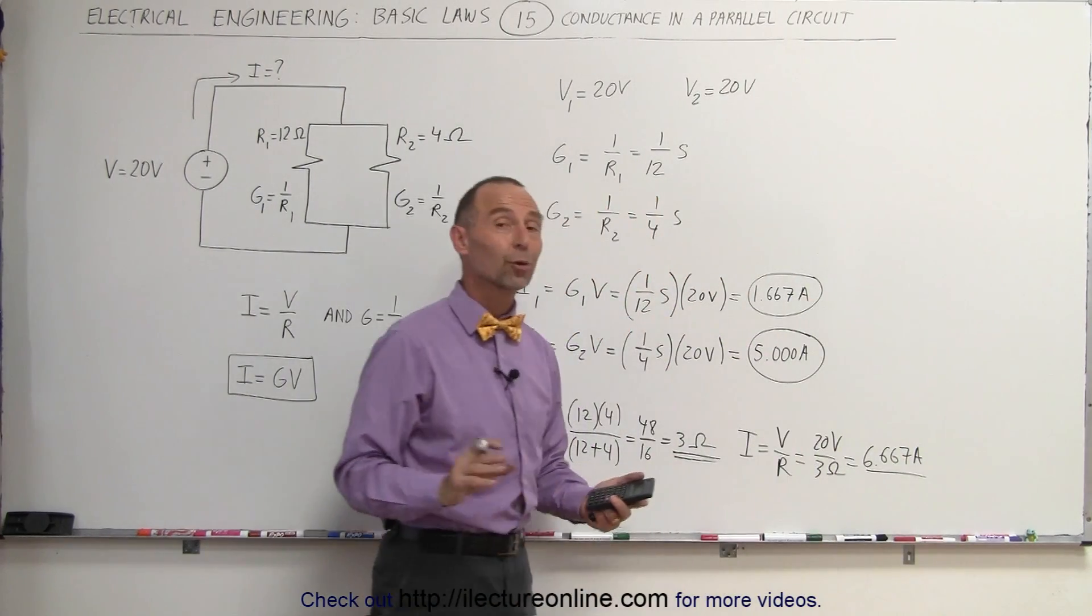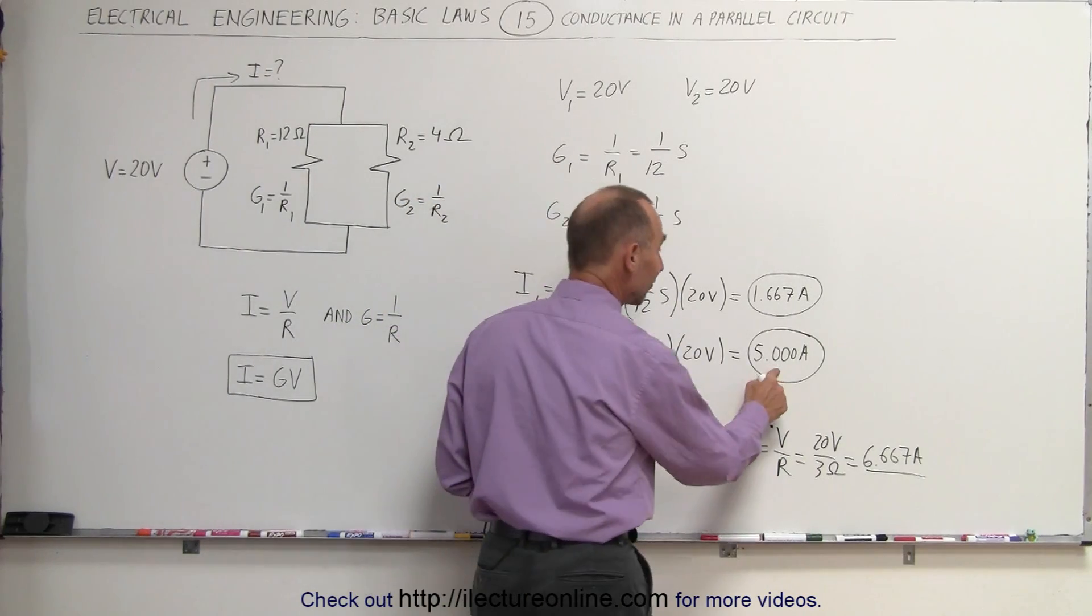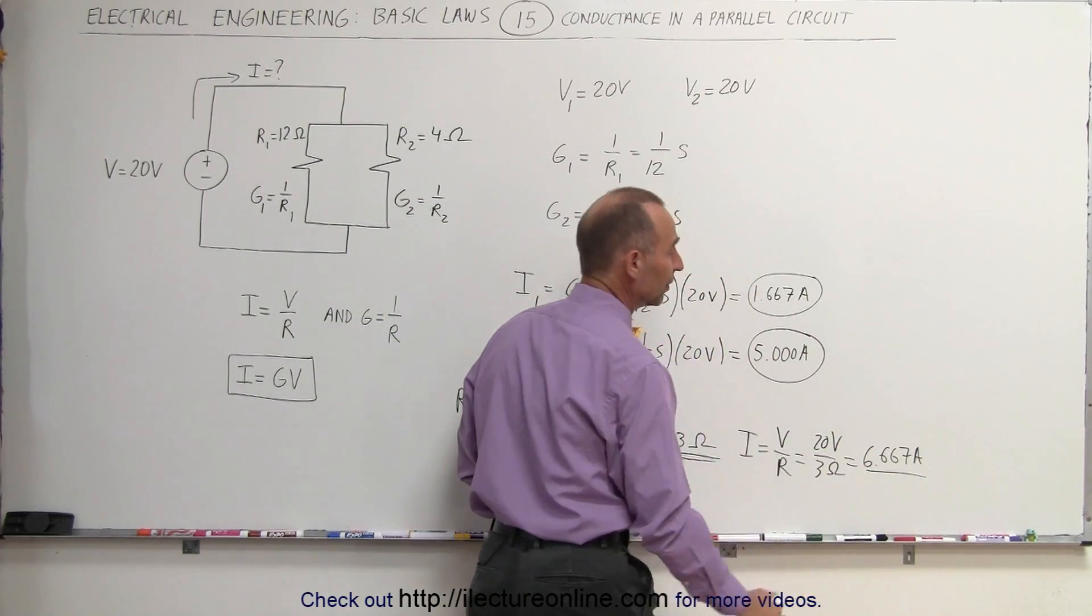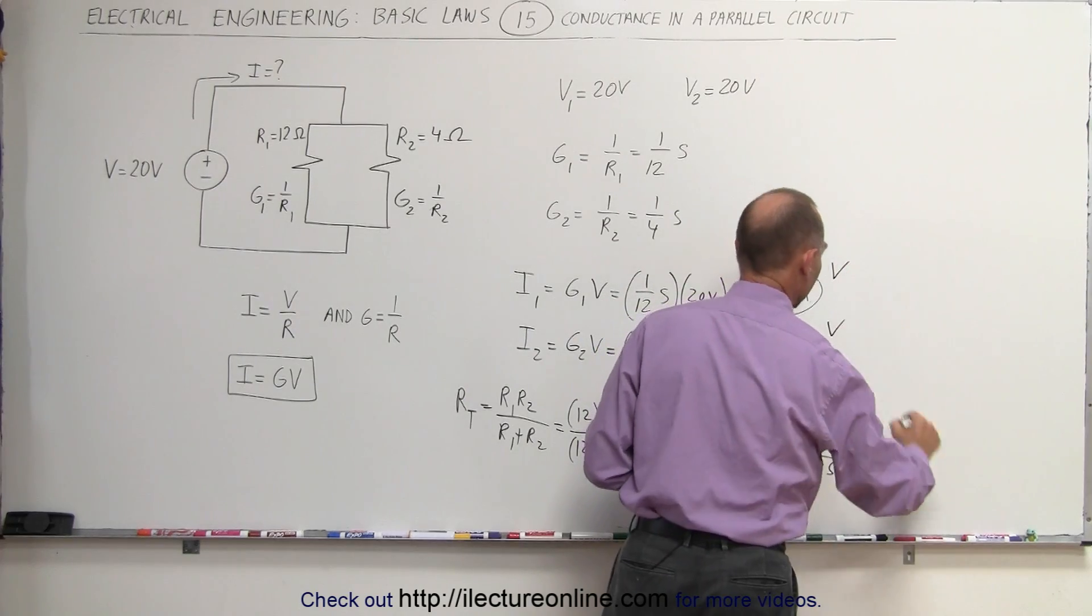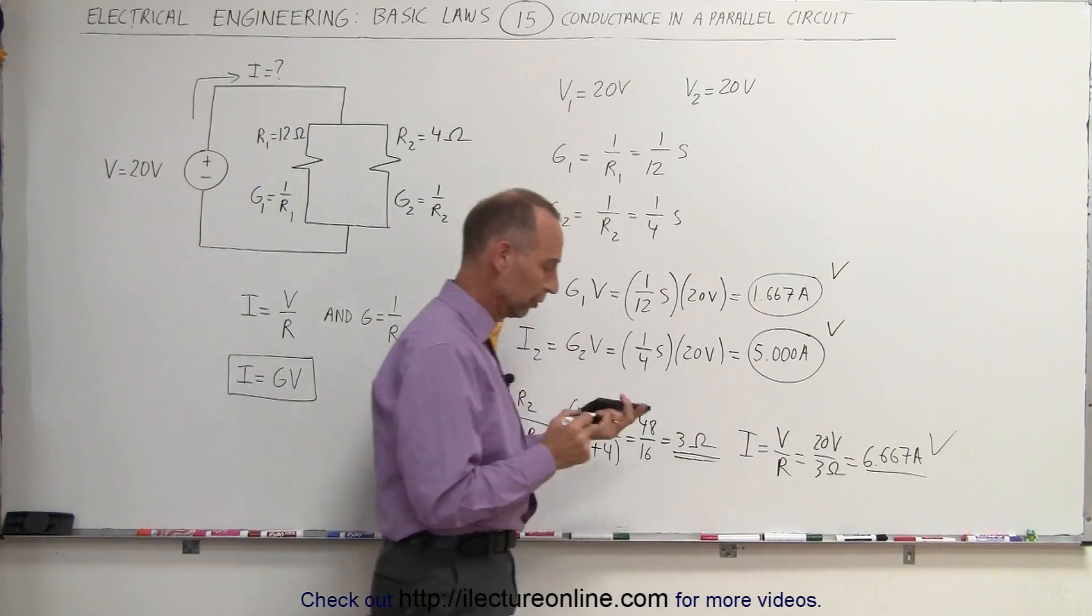And that should be the same as the sum of these two. And a quick inspection shows that 5 plus 1.667 is indeed 6.67. So we know that these are correct and it adds up to the total current.